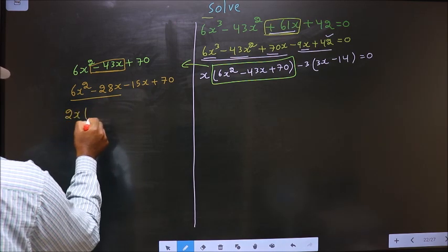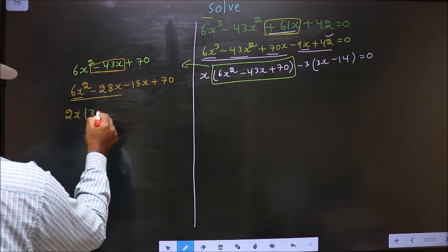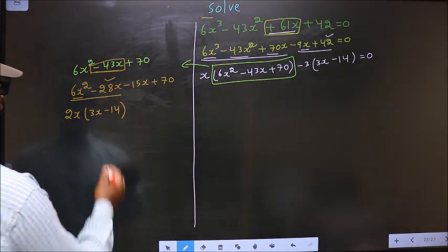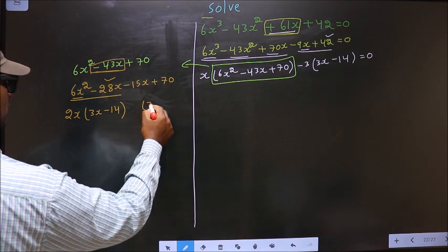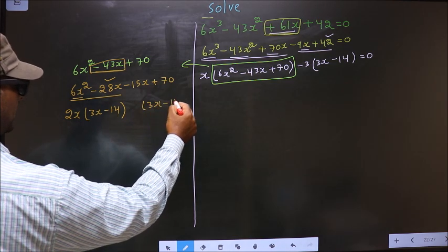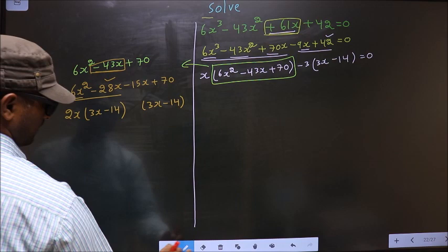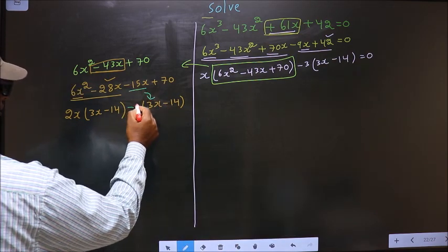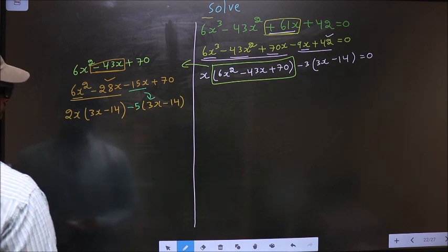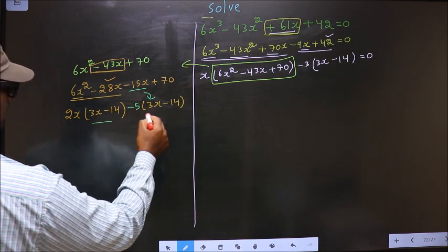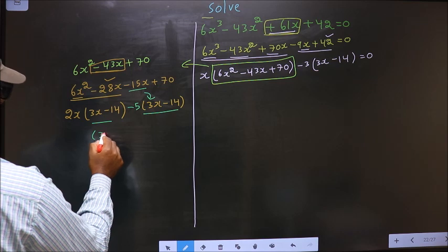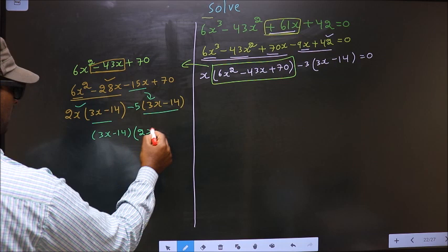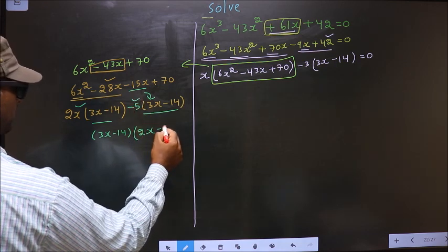From these 2 terms, what can you take out common? 2x. So here you get 3x and here you get minus 14. Whatever you have got here, here also you should get the same thing: 3x minus 14.